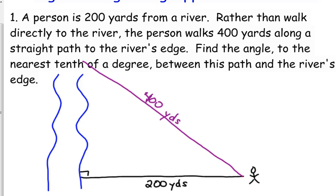Instead, the person walks 400 yards to get to the edge of the river, and we're going to assume that is in a straight line. Obviously, probably not, but simplifying the problem here. It says find the angle to the nearest tenth of a degree between this path and the river's edge.